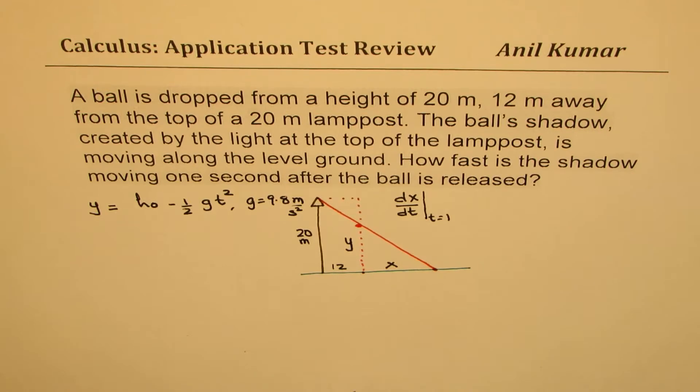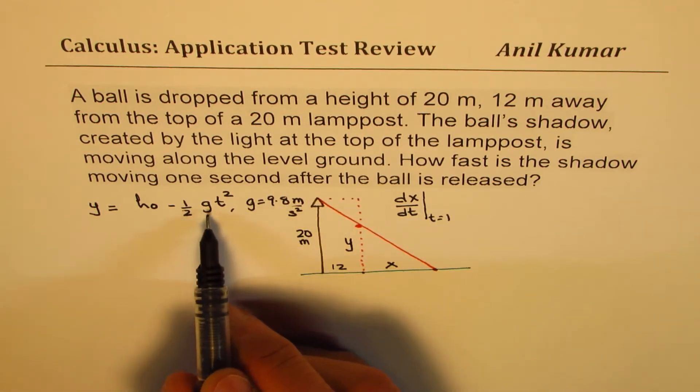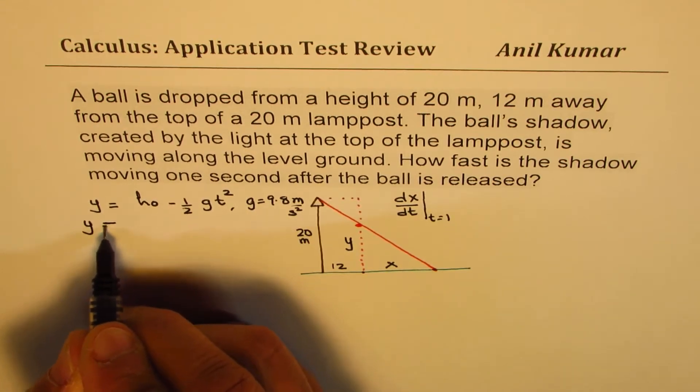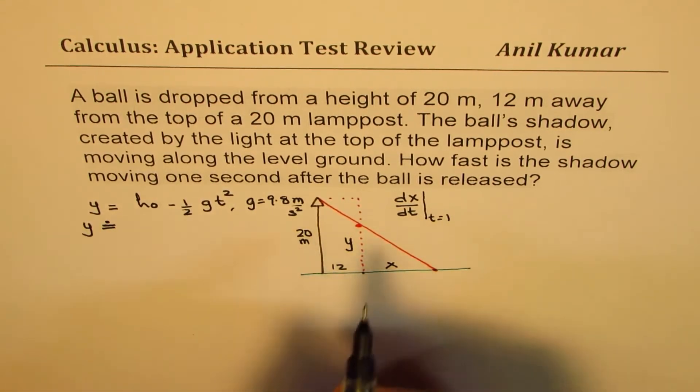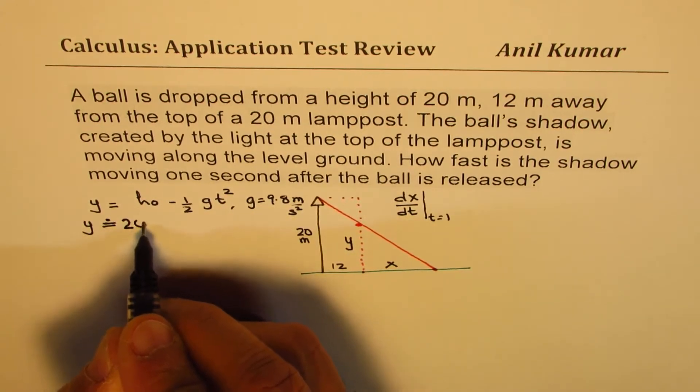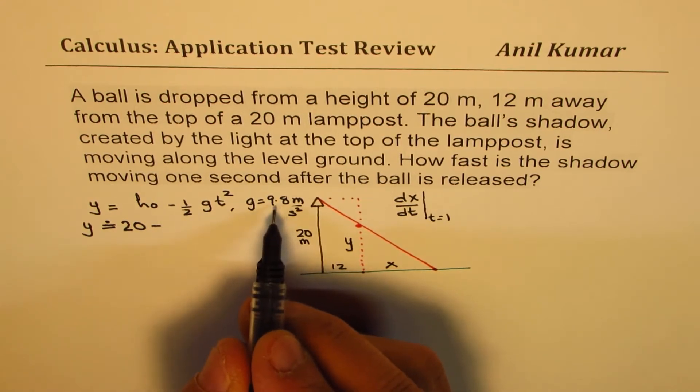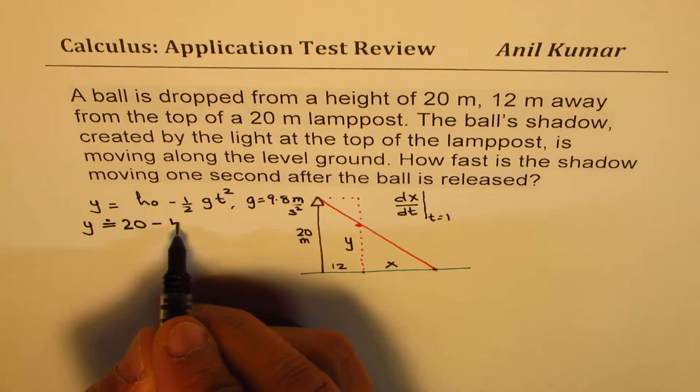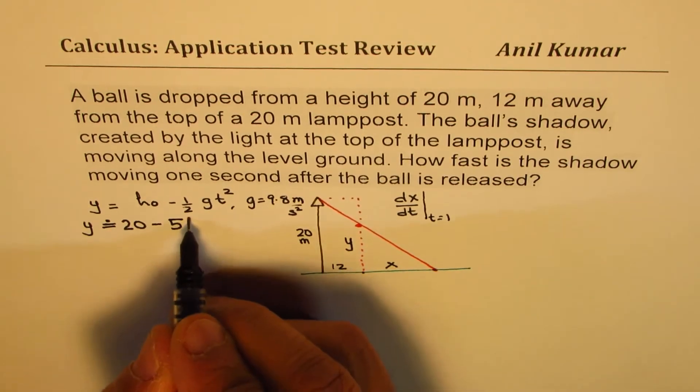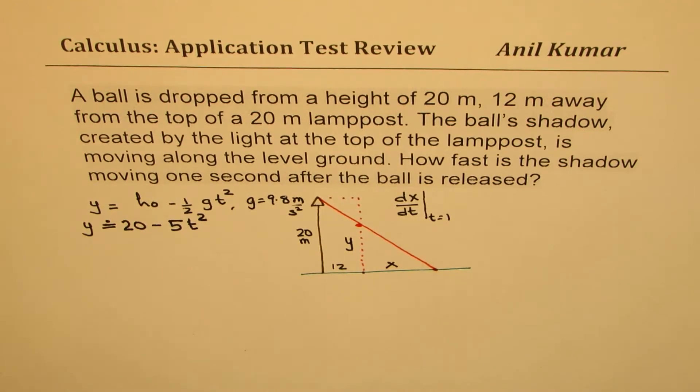So this is 9.8 divided by 2 is 4.9. But what I'm going to do here is I'm going to approximate it to simplify the question. Initial height is 20 meters, so I'll write 20 here, minus half of 9.8 is 4.9. I'm just going to write 5 here. So that is the approximation, t squared. So that becomes the formula.